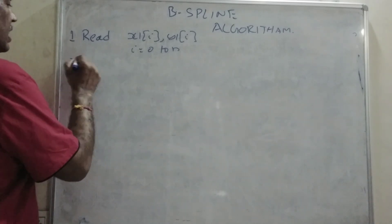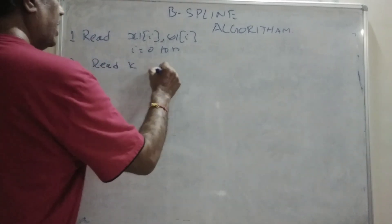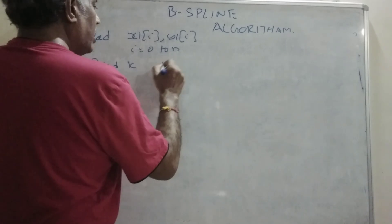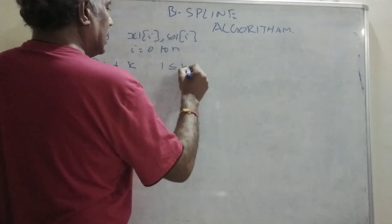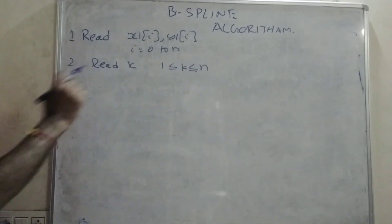In the second, read the degree of freedom K, it is between 1 less than or equal to K less than or equal to n. Any value between 1 to n, take the degree of freedom.